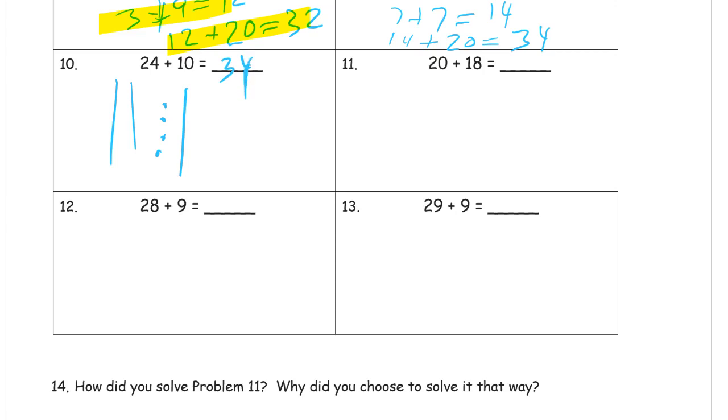20 plus 18. I'm going to see this 18 as a 10 and an 8. And then I'm going to add the 20 and the 10 first. And then add the 8 to the 30. 30 plus 8.